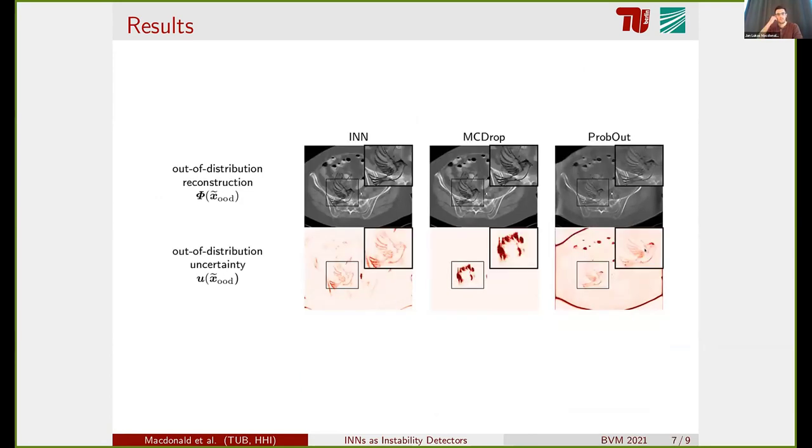Very similar results we get for the out-of-distribution experiment. Again, the interval neural networks can very well highlight the area where we added the bird silhouette. The dropout method gets the shape wrong, but roughly the area correct. And the dropout method gets the correct area, but also has a lot of uncertainty outside the perturbed region.